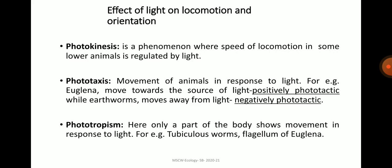Phototropism occurs in sessile organisms and involves light-directed growth mechanisms. In case of tubiculous worms and coelenterates such as polyps, and the flagellum of Euglena, only a part of their body shows movement in response to light, hence it is also called phototropism.